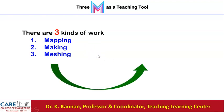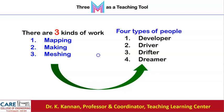If we practice mapping, making, and meshing, we identify 4 different types of people based on what proportion and what intensity they are using mapping, making, and meshing. There are 4 types of people: Developer, Driver, Drifter, and Dreamer.